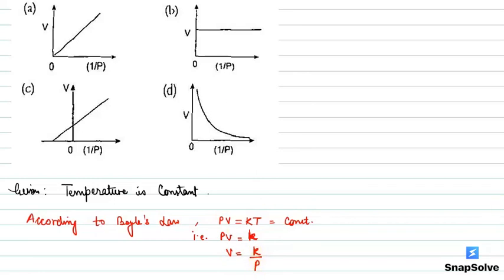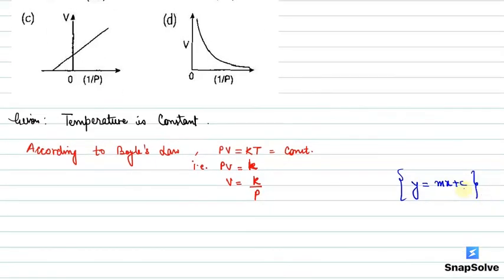Now, if we compare it with the straight line general equation, what is the general equation? Y is equal to mx plus C. So here, there is no intercept. C stands for intercept. So we put C to 0 and Y is equal to mx. So if we compare this with that line of general equation...